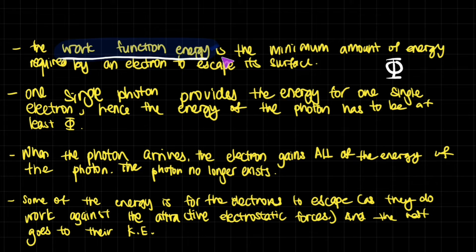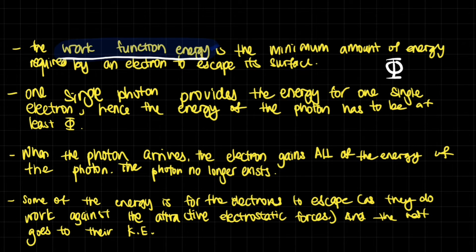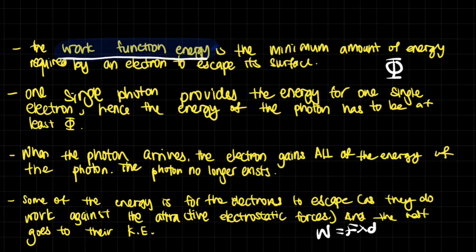The work function (φ) is the minimum amount of energy required by an electron to escape the metal's surface. A single photon provides energy for a single electron — so the photon's energy must be at least φ. The electron gains all of the photon's energy and the photon ceases to exist. Some energy goes to escaping the attractive electrostatic forces — that's φ, representing the work done against resistive forces as the electron moves out of the metal.